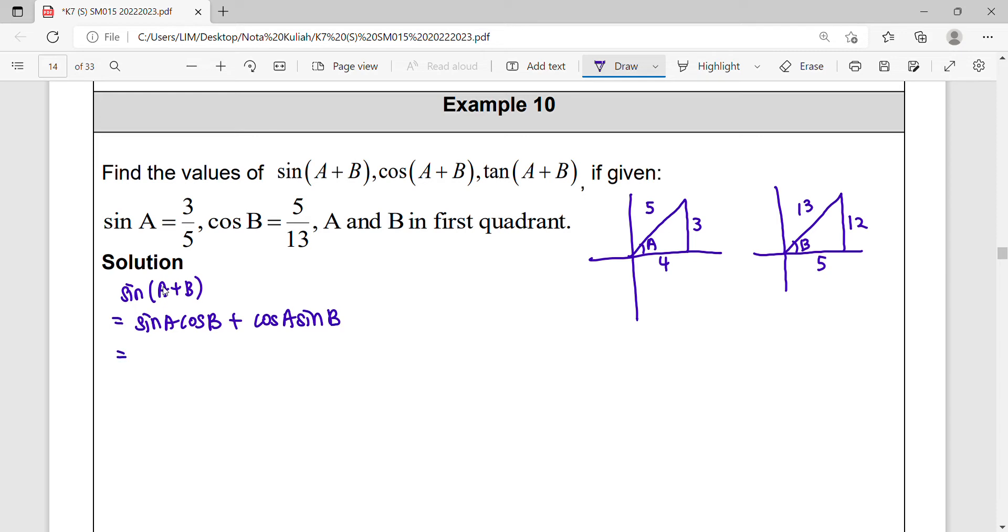So plug in your value. For here, they give you all in first quadrant. When you're having sine, cosine, tangent, all values will be positive. You learned it before right? All sine teacher crazy, so all trigonometry here give you positive value.